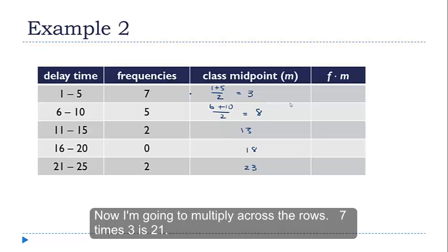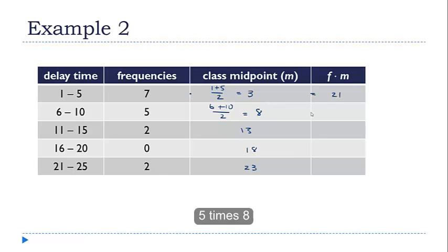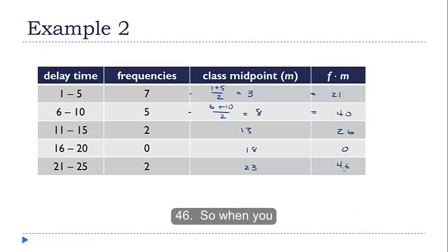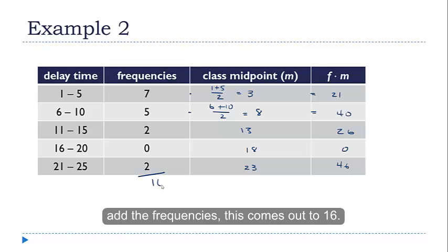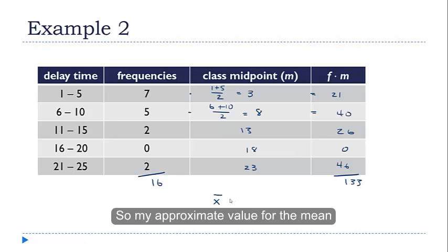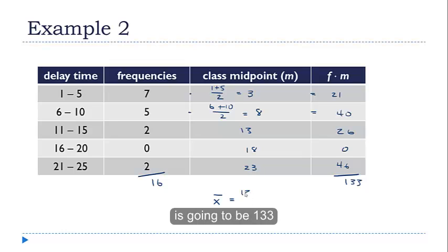Now I'm going to multiply across the rows here. 7 times 3 is 21. 5 times 8 is 40. 2 times 13 is 26. 0 times 18 is 0. That's okay. And 2 times 23 is 46. So when you add the frequencies, this comes out to 16. When you add the products here, this comes out to 133. So my approximate value for the mean is going to be 133 divided by 16, which is 8.313.